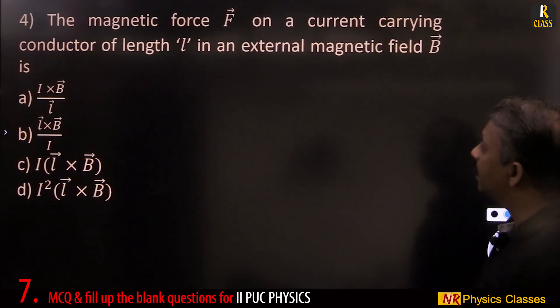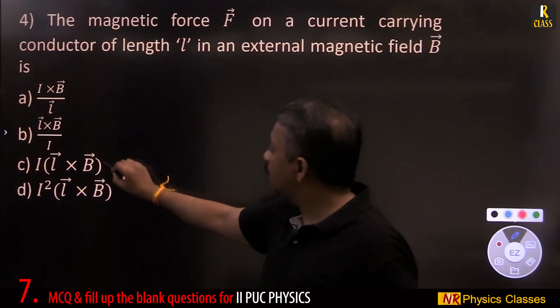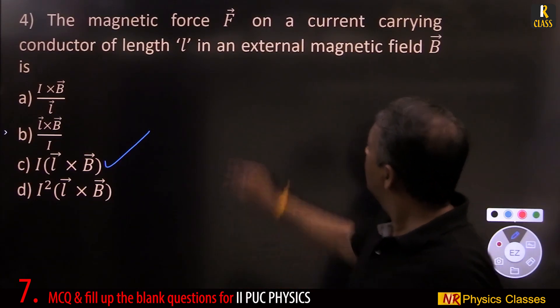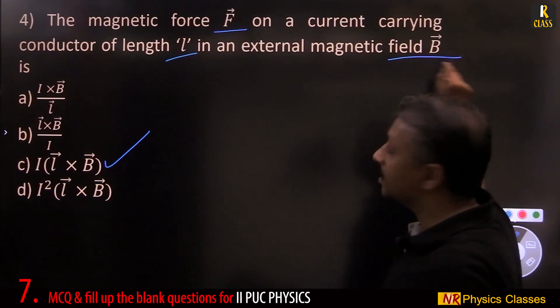The magnetic force on a current carrying conductor of length L in an external magnetic field is I into L cross B.